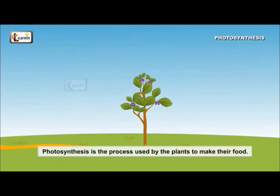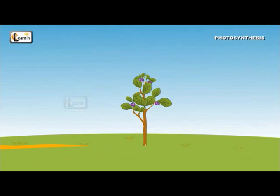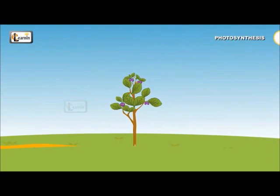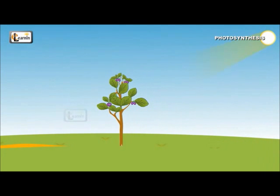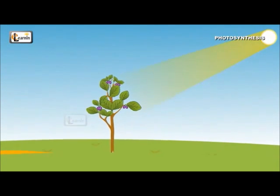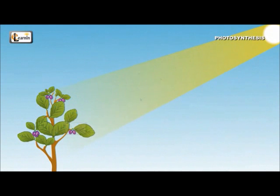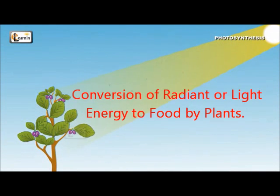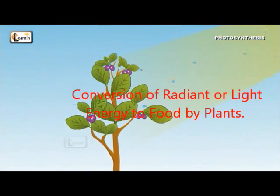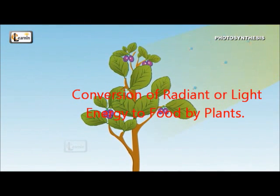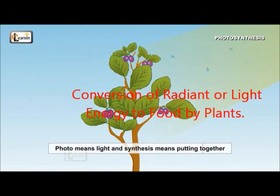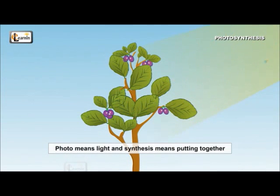Photosynthesis is the process used by plants to make their own food. Or in more complex terms, it is the conversion of light energy into chemical energy by plants. This chemical energy is used by the plants for growth and nourishment. Photo means light and synthesis means putting together in Greek.